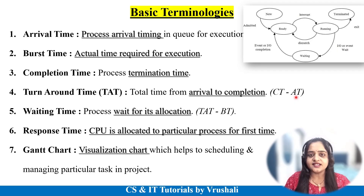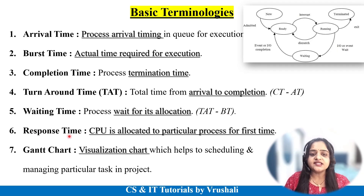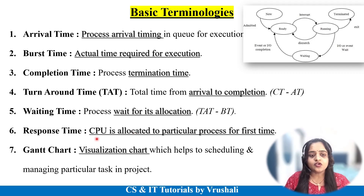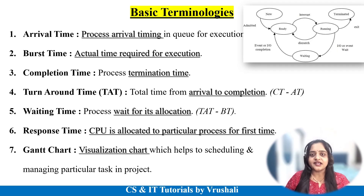The formula for turnaround time is completion time minus arrival time. Next is waiting time: due to some allocation reason, a process goes to the waiting state. When a process waits for allocation, that is called waiting time. The formula is turnaround time minus burst time. Next is response time: when the CPU is allocated to a particular process for the first time, that is called response time. And finally, the Gantt chart is a visualization chart that displays the scheduling of each and every process — their arrival time and completion time in a diagrammatic manner.